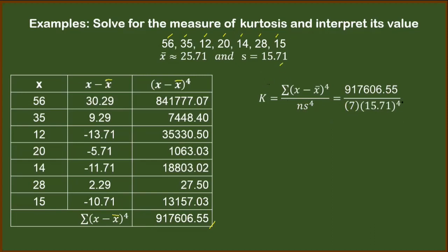And s here is the standard deviation of 15.71. We will get its fourth power and round it off to the second decimal number as well. That will give us 60,912.26. Multiply the two numbers in the denominator, we should have 426,385.82.